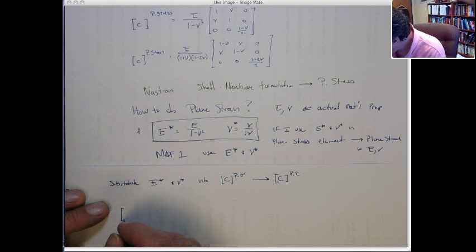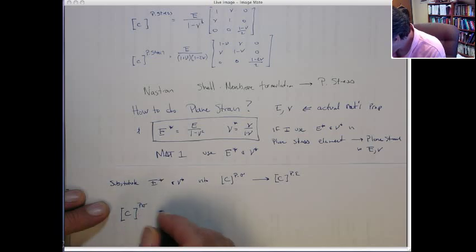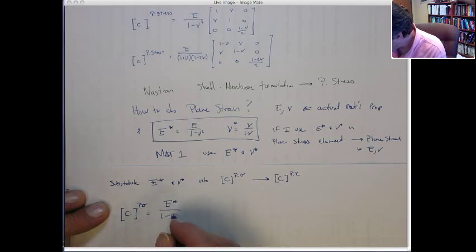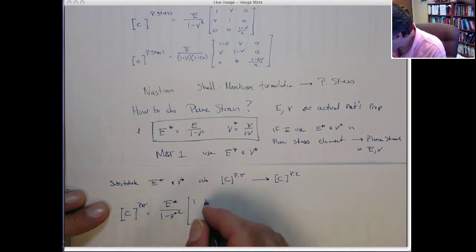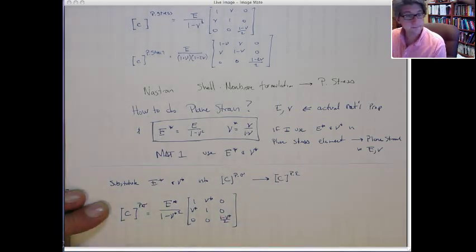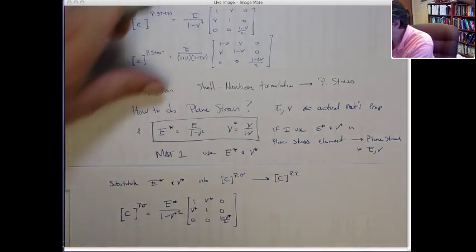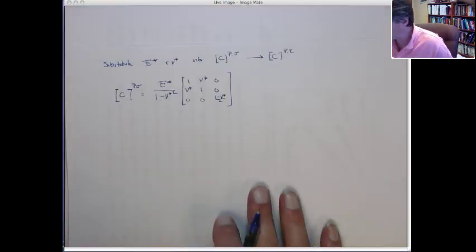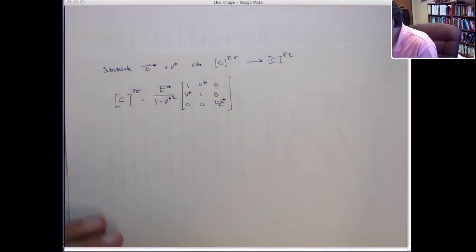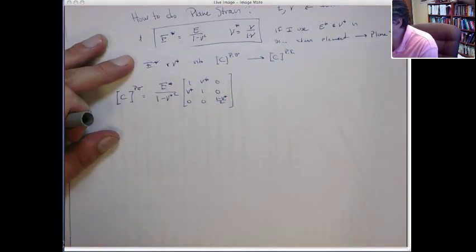So if I write this using E* and ν*, this becomes E* over 1 minus ν* squared, with the matrix: 1, ν*, 0; ν*, 1, 0; 0, 0, 1 minus ν* over 2. All right? So that's the plane stress material stiffness, just using E* and ν*. Now let's substitute the definitions for E* and ν*.